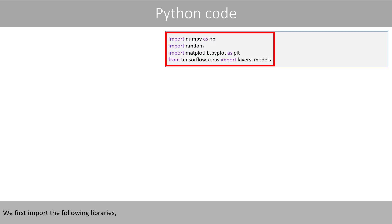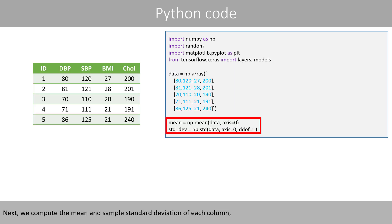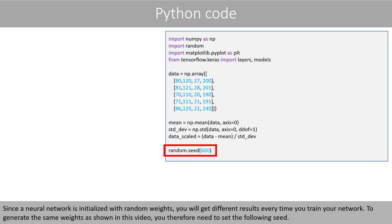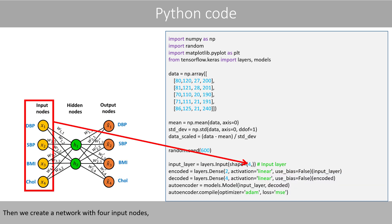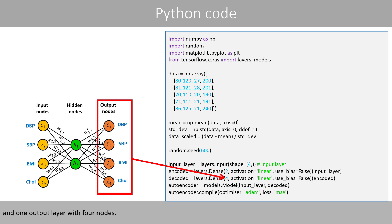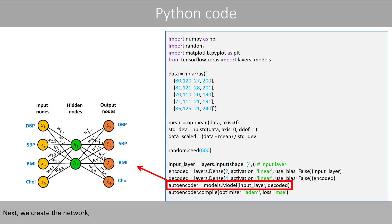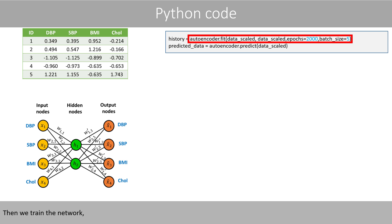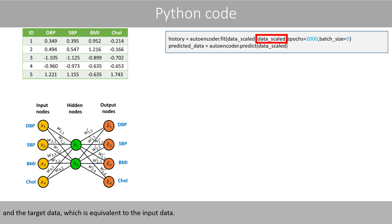We first import the following libraries and plug in our data. Next, we compute the mean and the sample standard deviation of each column, so that we can compute the standardized data. Since a neural network is initialized with random weights, you will get different results every time you train your network. To generate the same weights as shown in this video, you therefore need to set the following seed. Then we create a network with four input nodes, two hidden nodes, and one output layer with four nodes. Next, we create the network, and say that we like to use an optimizer called Adam, and a loss function based on the mean squared error. Then we train the network. We plug in our input data and the target data, which is equivalent to the input data. We here run 2000 epochs, so that we can recreate the input data almost completely.